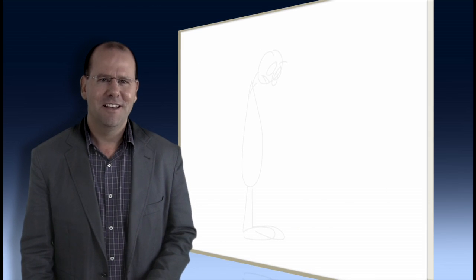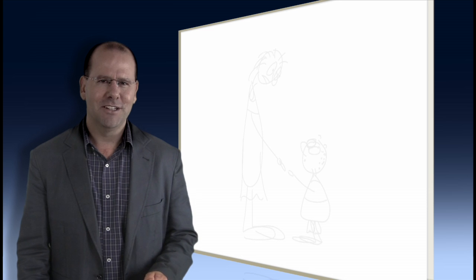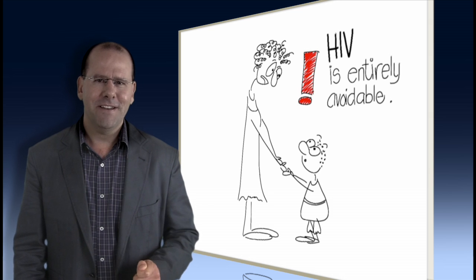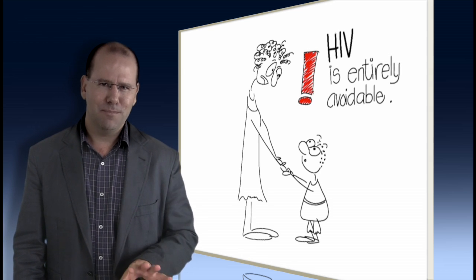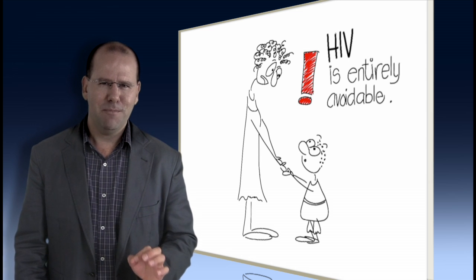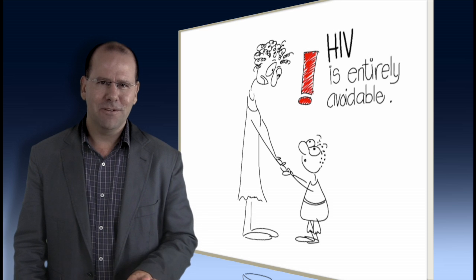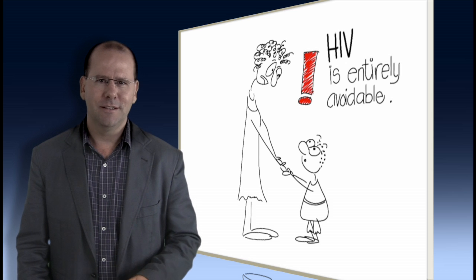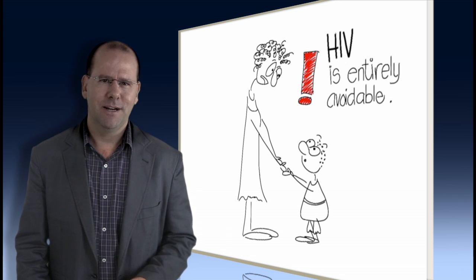Fact number eight. Mother-to-child transmission of HIV is almost entirely avoidable. Access to preventative interventions remains limited in most low and middle income countries, but progress has been made. In 2011, 56% of pregnant women living with HIV received medicines to prevent mother-to-child transmission of the virus.